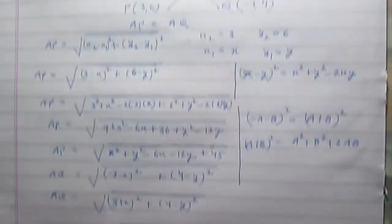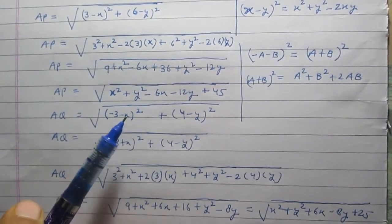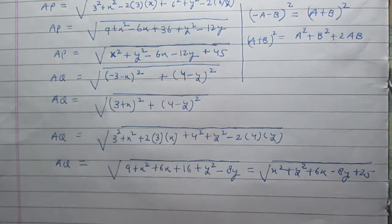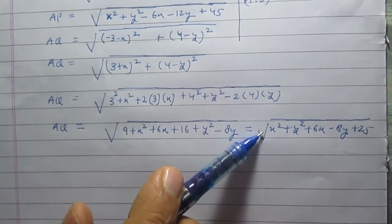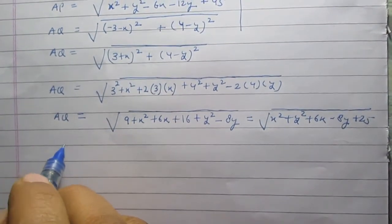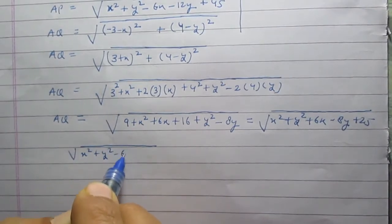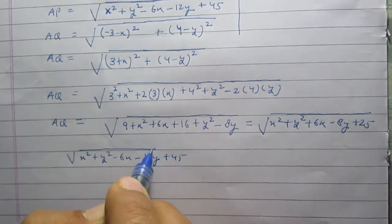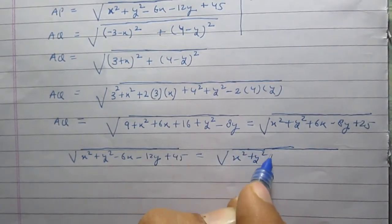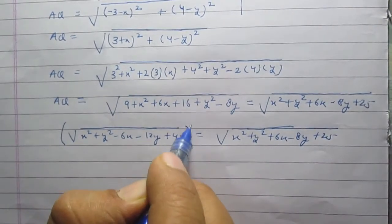Now we are given that AP equals AQ. We have found AP equals the square root of (x square plus y square minus 6x minus 12y plus 45), and AQ equals the square root of (x square plus y square plus 6x minus 8y plus 25). On equating AP equal to AQ, we get the square root of (x square plus y square minus 6x minus 12y plus 45) equals the square root of (x square plus y square plus 6x minus 8y plus 25).